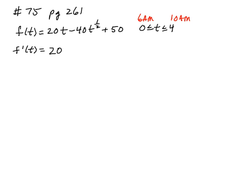So the 1/2 comes down and multiplies the negative 40 to get minus 20t^(-1/2). And I'm going to set that equal to 0. Also I'm going to write that second term as 20 over the square root of t.